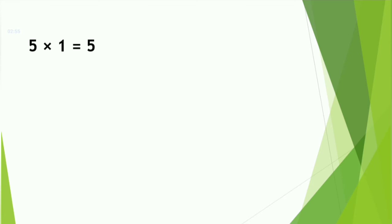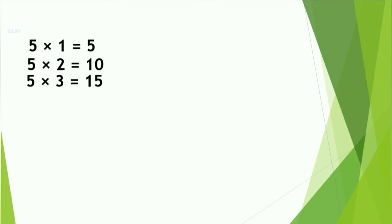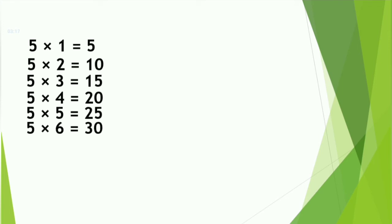Five ones are five. Five twos are ten. Five threes are fifteen. Five fours are twenty. Five fives are twenty-five.